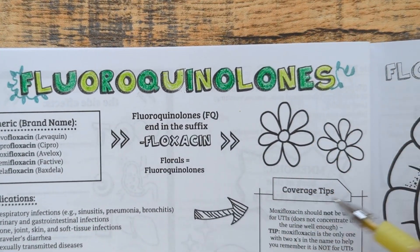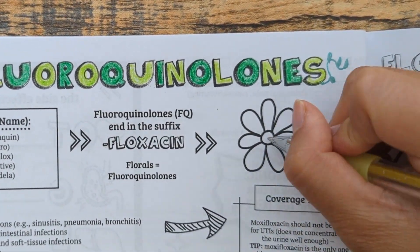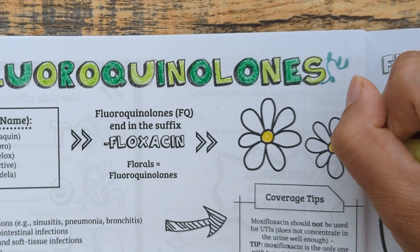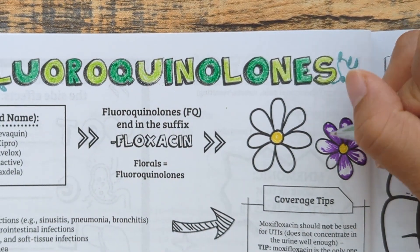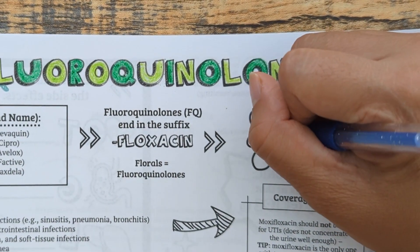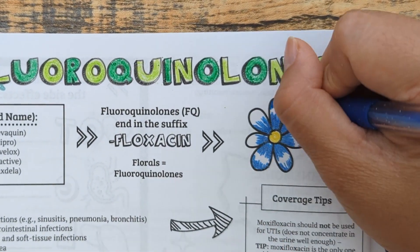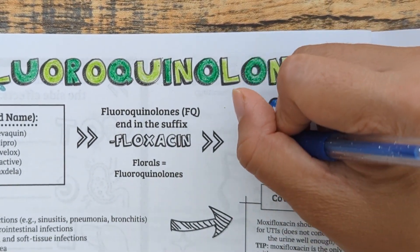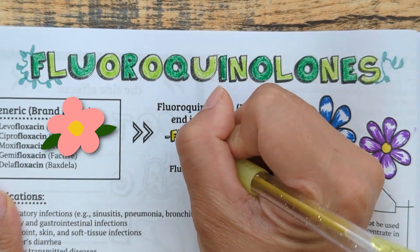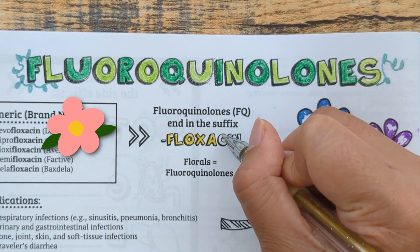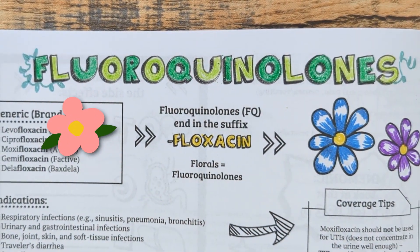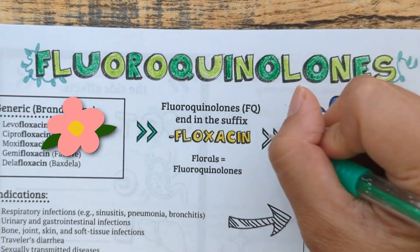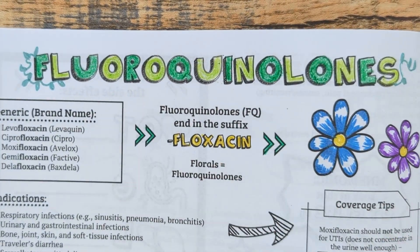When you think of this class of fluoroquinolones, use the visual anchor of florals. The drugs in this class are super easy to recognize as they all end in the suffix "-floxacin." So anything that ends in "-floxacin" should remind you of the phlox flower, which is a type of floral for fluoroquinolones.